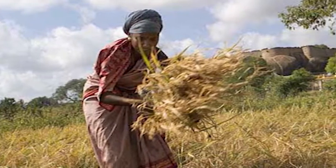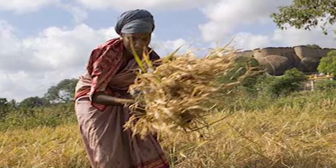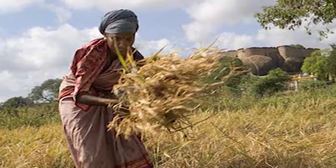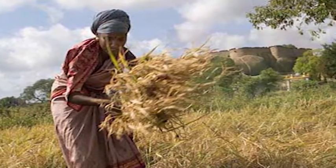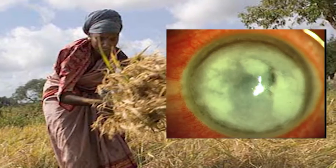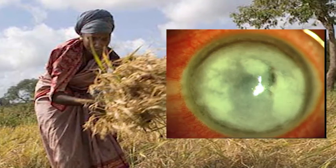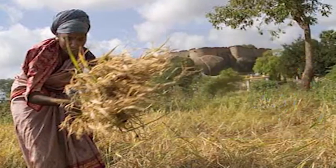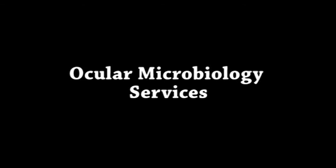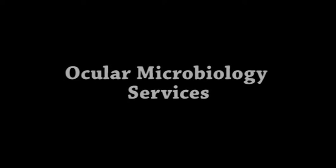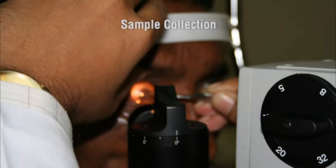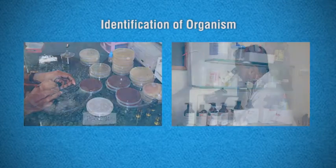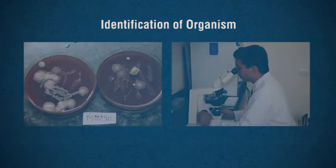In India, both bacterial and fungal corneal ulcers occur in equal proportions. So it becomes very important to identify the organism and start specific therapy. Microbiology services include sample collection, sample processing, and identification of the organisms.